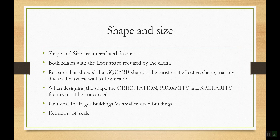If you maintain the same shape and size for each floor, you can use the same materials. For example, in system formwork, one mold can be used for multiple floors since it is mold fabrication. However, it is difficult because structural element sizes may differ going up. If you can at least keep the shape consistent, you gain some advantage.